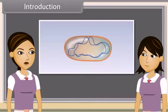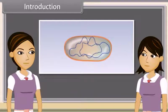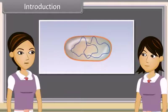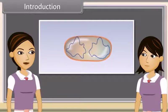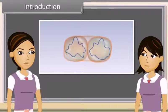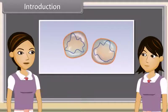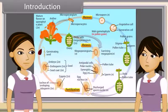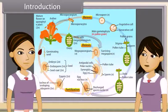As we have already discussed, reproduction is the ability of all organisms to produce young ones similar to themselves in most of characters. The process which involves fusion of male and female gametes to form a new individual is known as sexual reproduction.